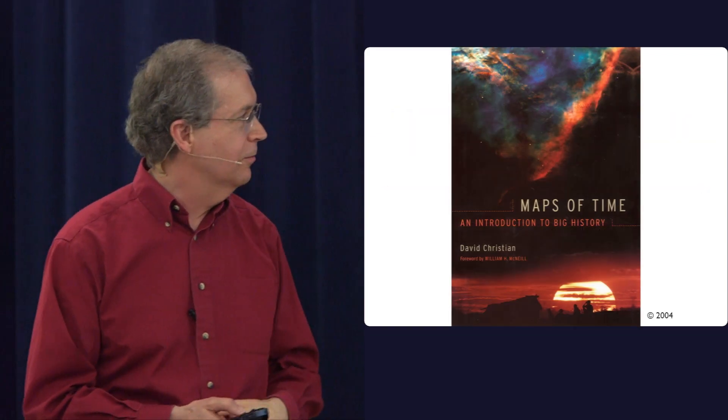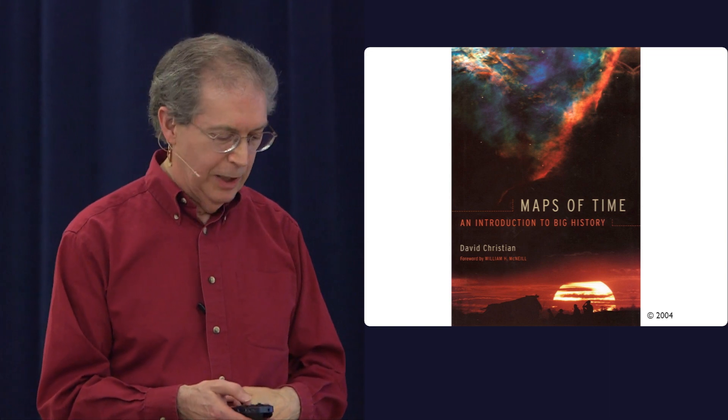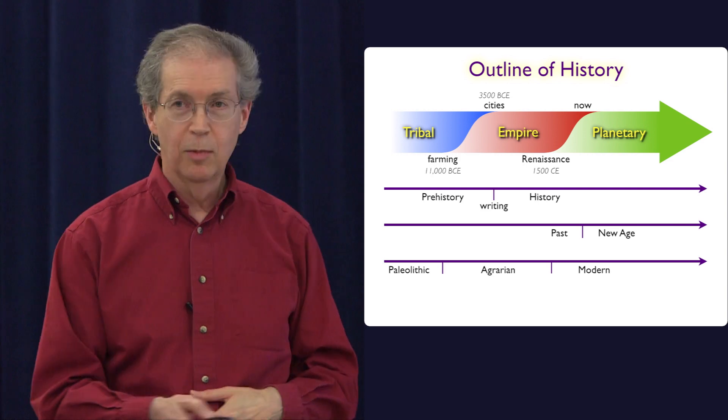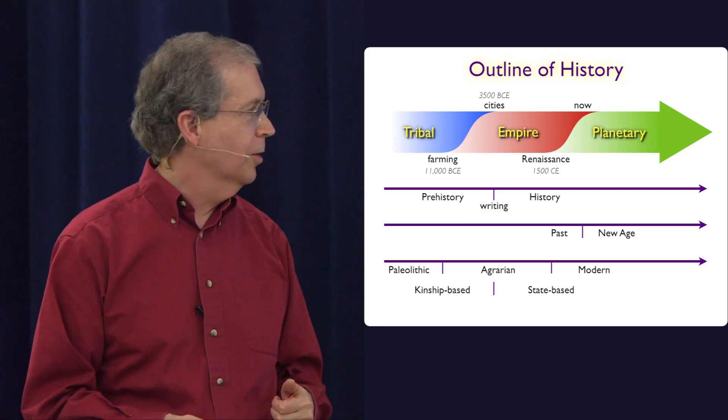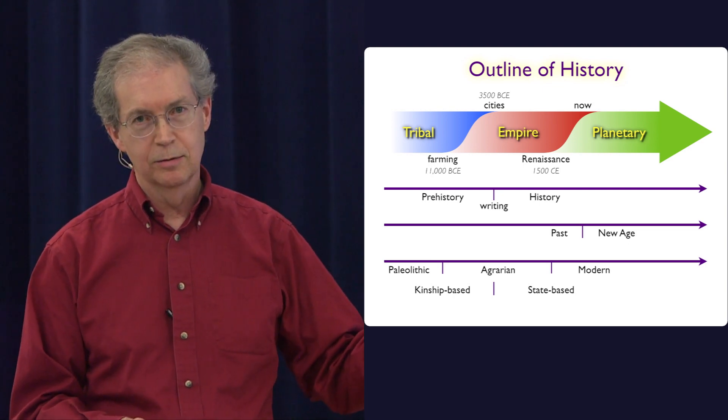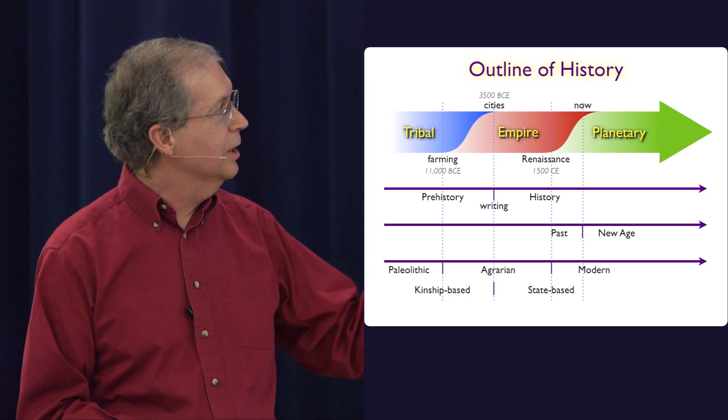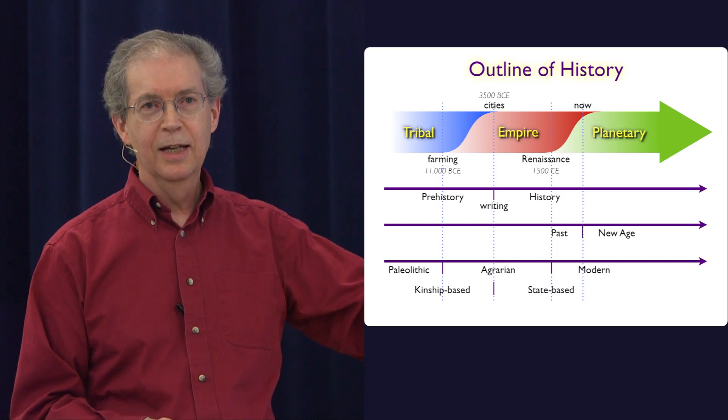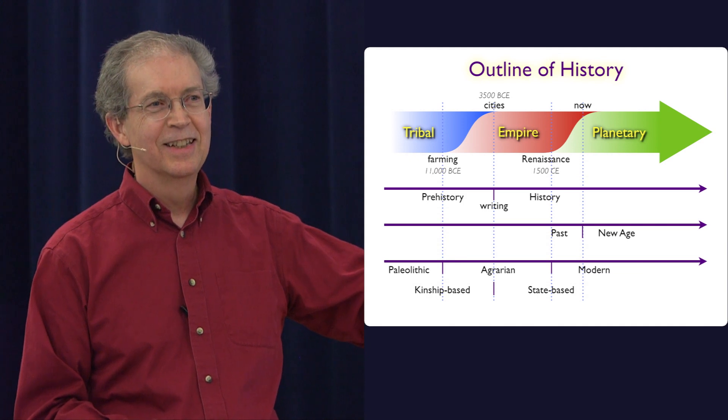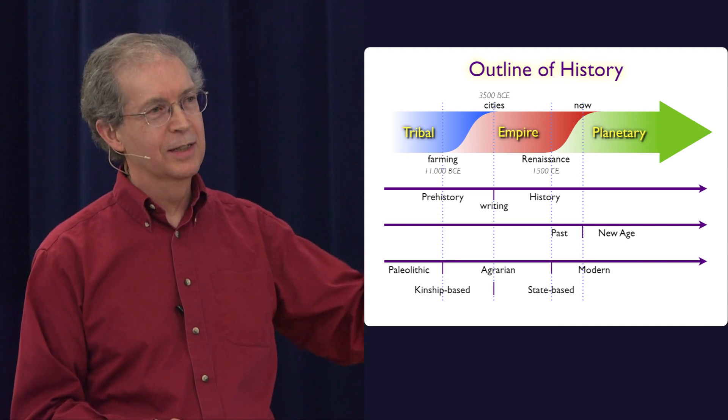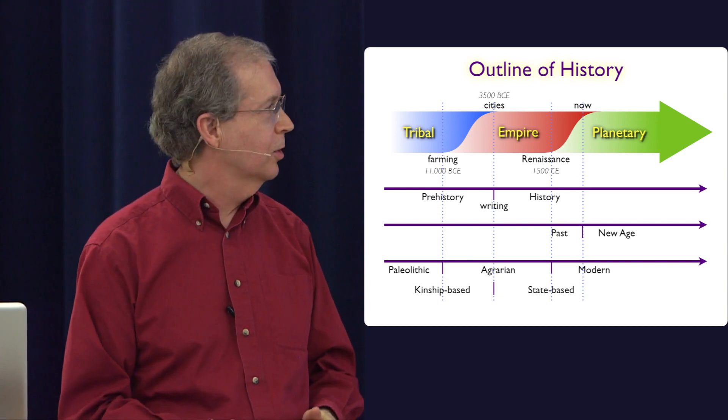There are also historians that have looked at this big stretch. And I want to refer to the work of David Christian, An Introduction to Big History. And he talks about Paleolithic, agrarian, and modern. But he finds he really has to split the agrarian. So he has kinship-based and state-based. So it gets a little complicated. However, if you draw lines down through all these, you'll see that they line up really quite nicely. And that isn't just because I put this slide together to make it line up nicely.